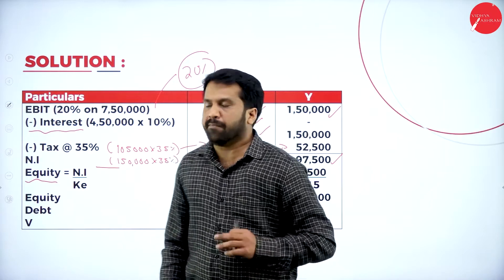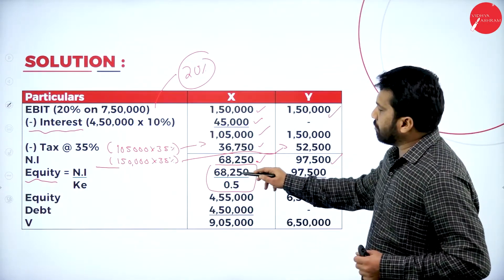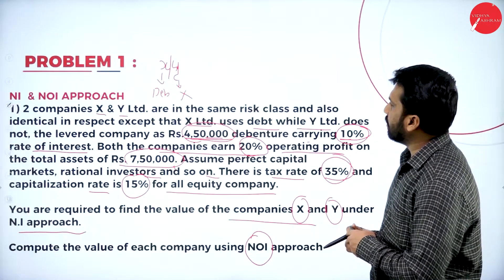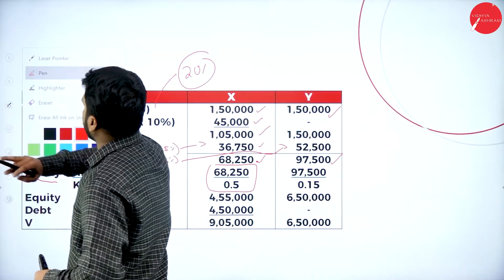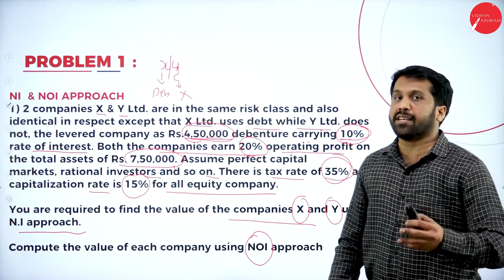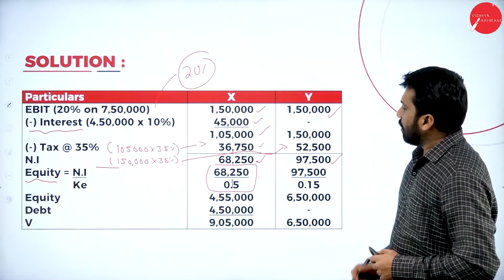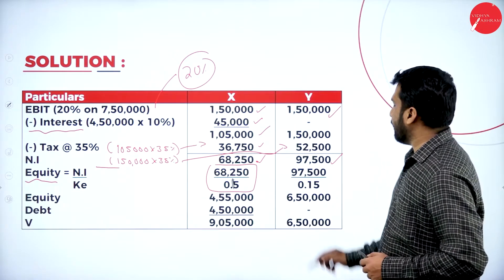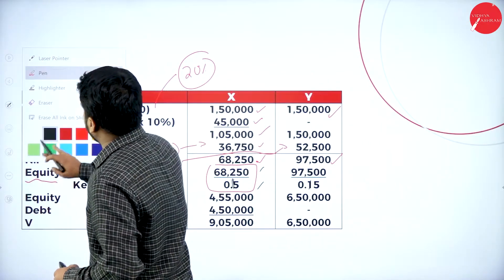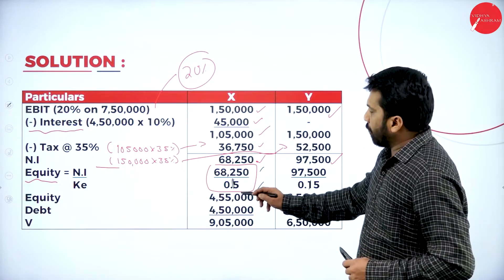After getting net income, the next step under NI approach is to find the value of equity. Value of equity = Net Income ÷ Cost of Equity. Net income for X is 68,250. Cost of equity is 15 percent — it is given for the all-equity company, meaning this is the cost of equity. So 68,250 ÷ 0.15 = 4,55,000.